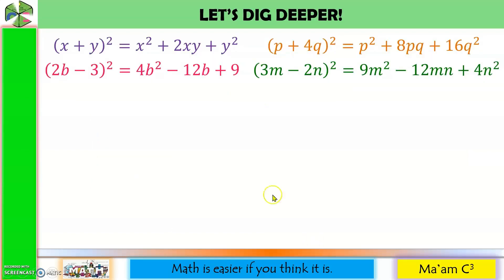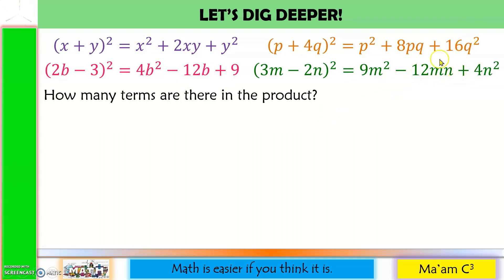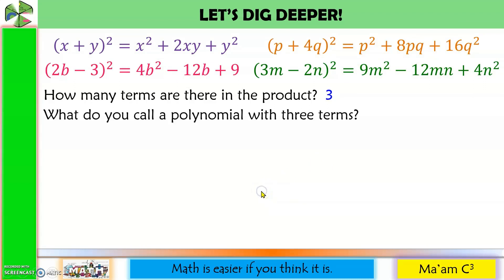Let's dig deeper with the examples we had earlier. How many terms are there in the product? Counting the terms in each product, there are 3 terms. And what do you call a polynomial with 3 terms? We call it a trinomial.